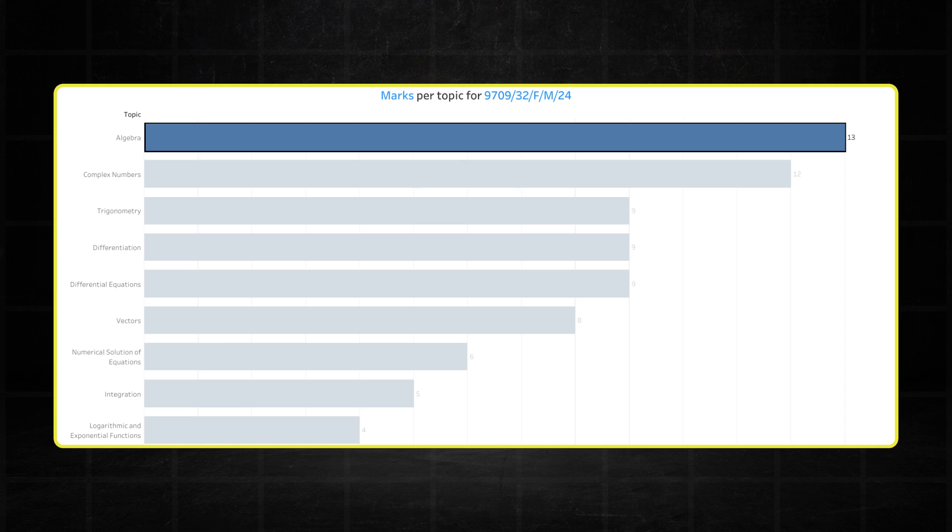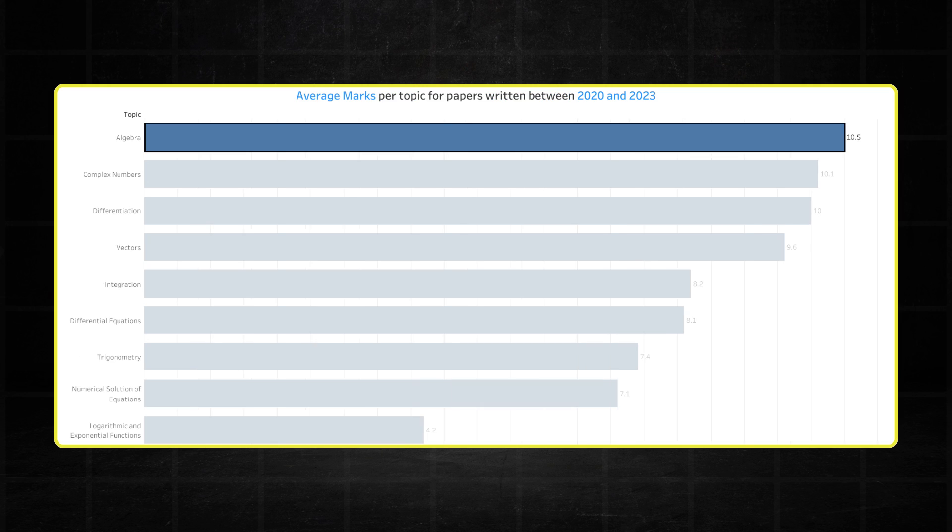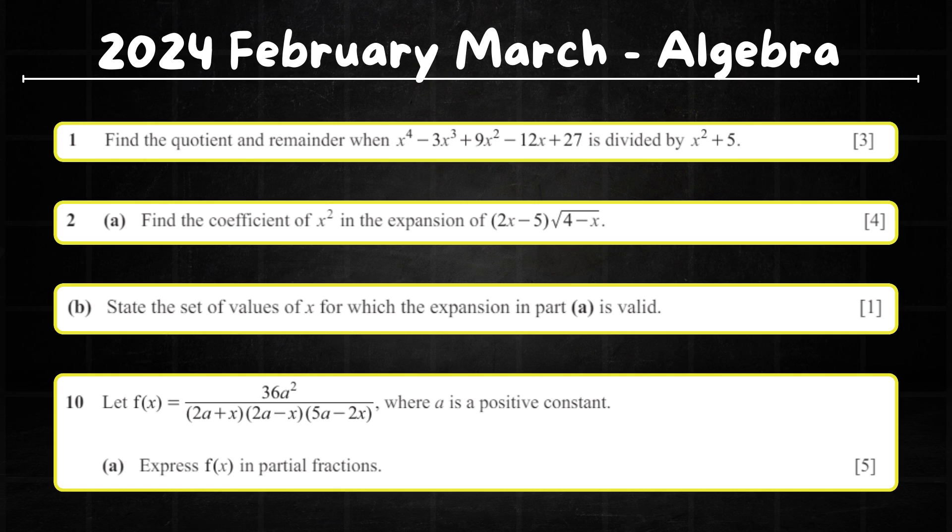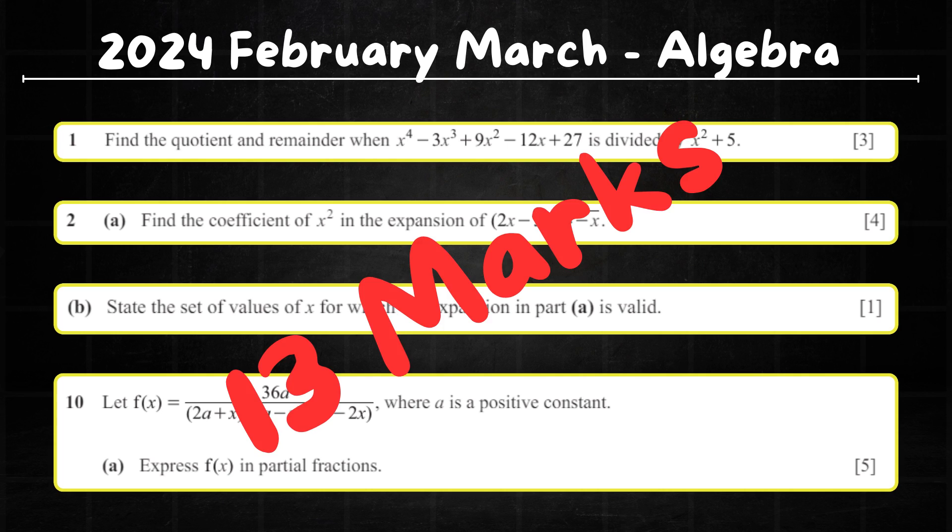Starting off with Algebra. Algebra somewhat overperformed its 10.5 mark average, but this is typical of it. It's a very explosive topic having a ceiling of 18 marks. In the February-March paper, it had 3 questions. The first being a 3-mark polynomial division question, the second being a 5-mark binomial expansion question, and the third being a 5-mark partial fractions question, which brings its tally up to 13 marks in the February-March paper.